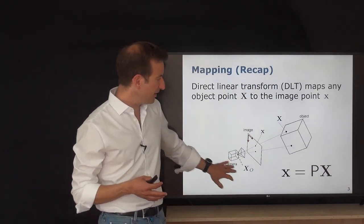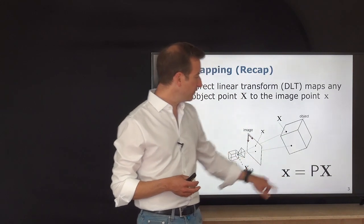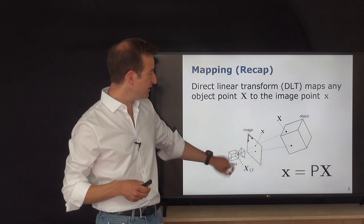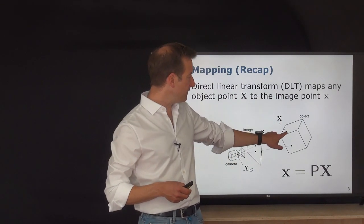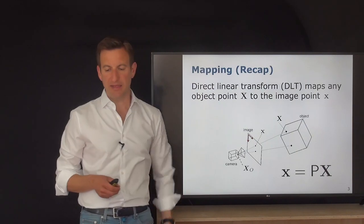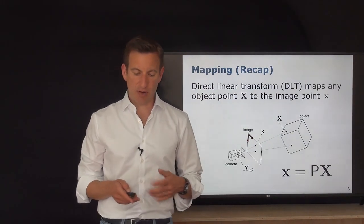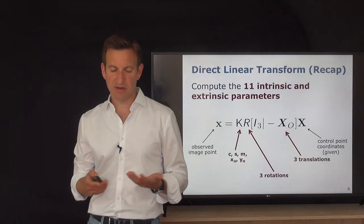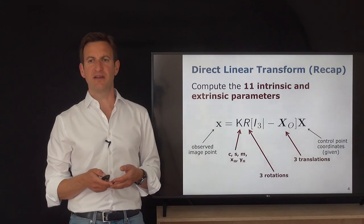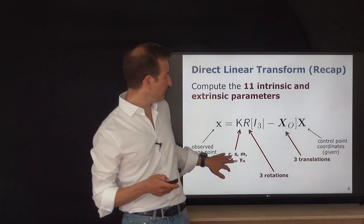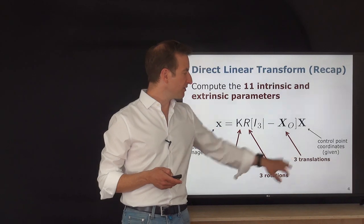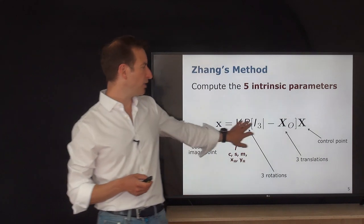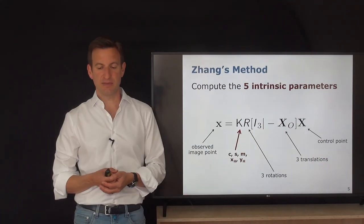The DLT mapping tells me how to project a point from the 3D world to 2D. We have the image plane, the projection center of our camera, and the 3D point in the world projected onto the image plane. For fully describing these mappings, we need P, which has 11 degrees of freedom. DLT estimated all 11 degrees of freedom — 5 calibration, 3 translation, 3 rotational parameters. In Zhang's method, we don't care about R and X0; we are only interested in obtaining the calibration matrix K.